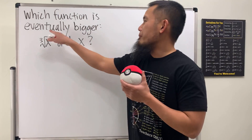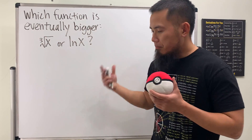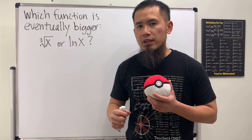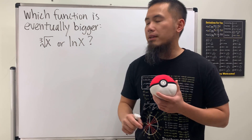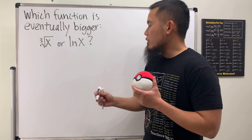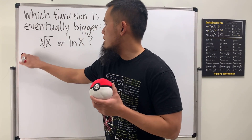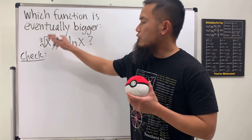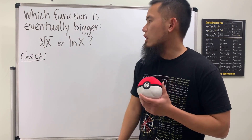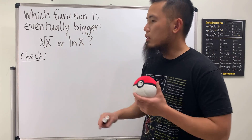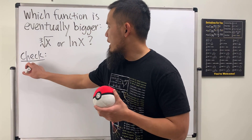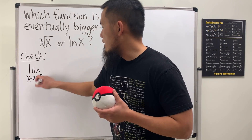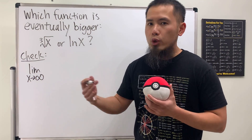Here's the deal: I'm using the phrase 'eventually bigger' to mean that I want to compare the y-values of the functions as x is approaching infinity. That's what I mean by this. So here is the check we have to do — because 'eventually' means when x is approaching infinity, I just want to compare the y-values of the functions. The check is to take the limit as x approaches infinity.